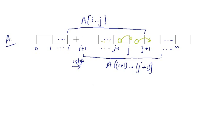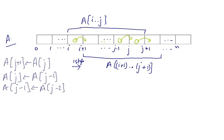And at last we will copy the contents of A[i] to A[i+1]. So A[j+1] is updated by A[j], A[j] is updated by A[j-1], A[j-1] is updated by A[j-2], and so on.